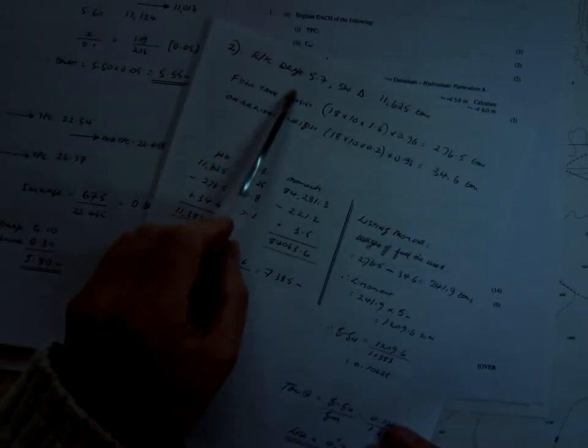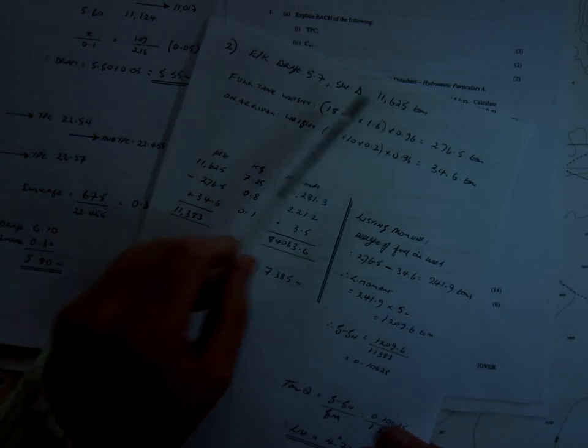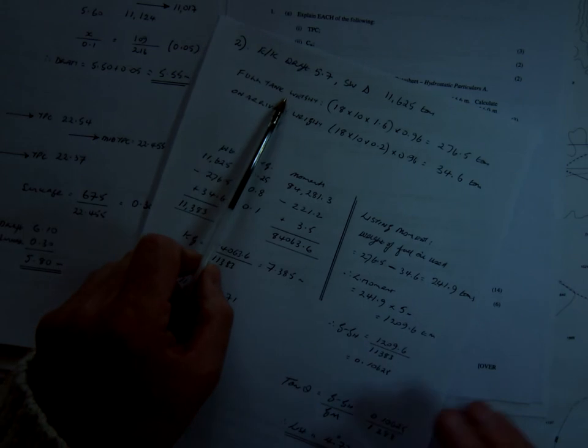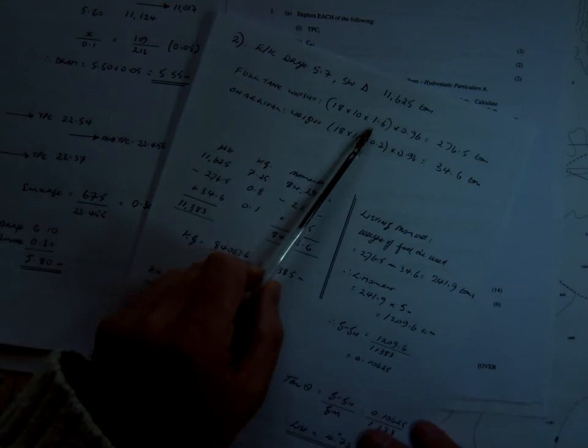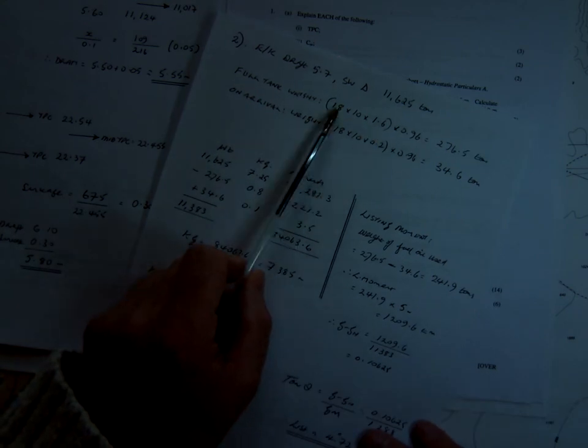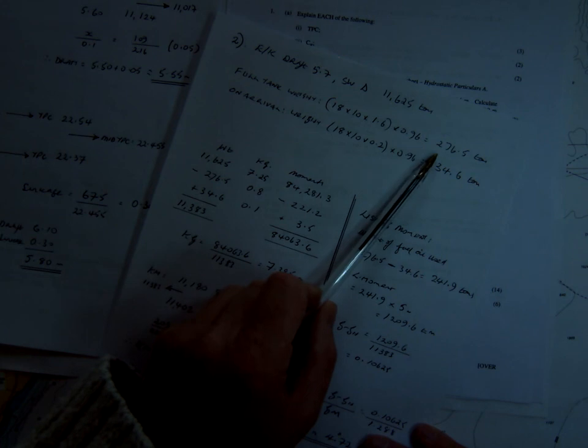So at even keel 5.7, our displacement in saltwater is 11,625 from the hydrostatic particulars. The full tank weight, and don't forget, we're only talking about the starboard tank here, so the port tank is irrelevant in this question. The full tank weight, 18 by 10 by 1.6, length by breadth by the depth, because we've no ullage, it's a full tank, multiplied by 0.96 means there's a full tank weight of 276.5.